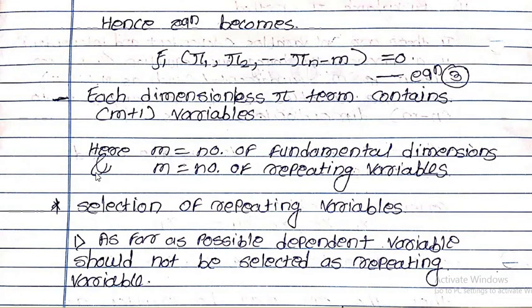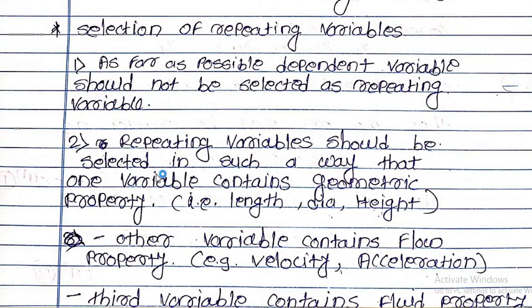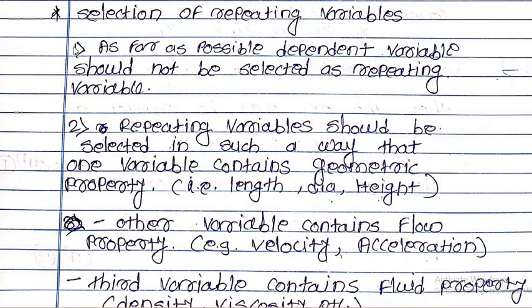Each dimensionless pi term contains m plus 1 variables, where m is the number of fundamental dimensions. In the pi terms, m also signifies the number of repeating variables — so however many fundamental dimensions are included in the phenomenon, that many repeating variables should appear in each pi term. Repeating variables are those variables which are repeated in each and every pi term, appearing in pi1, pi2, up to pi(n-m).